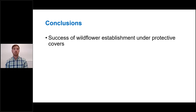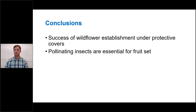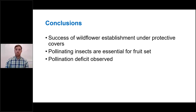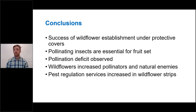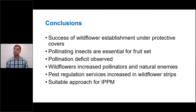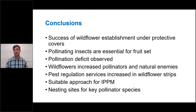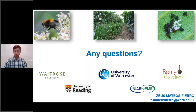In conclusion, wildflowers can be successfully established in orchards under covers, and pollinators are really important to underpin yields. But there was a pollination deficit because managed pollinators cannot achieve maximum yields. Wildflower strips can enhance both pollinators and natural enemies, and the greater number of natural enemies can lead to better pest regulation service. Wildflowers are a really suitable approach for integrated pest and pollinator management programs. However, nesting sites — as Mike mentioned — also need to be considered.